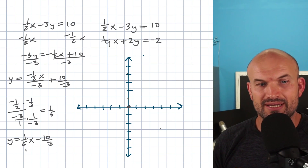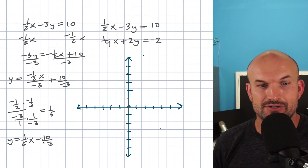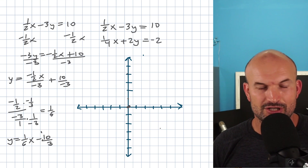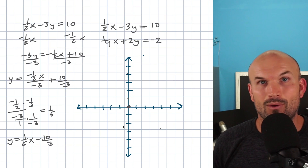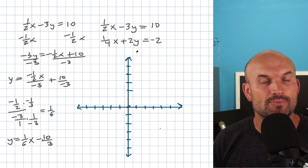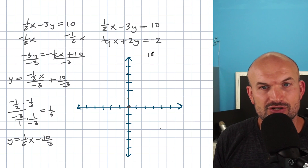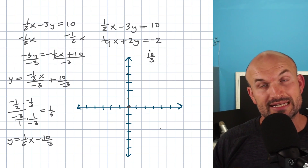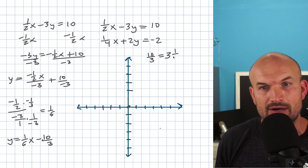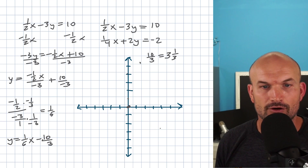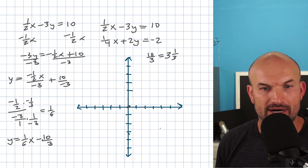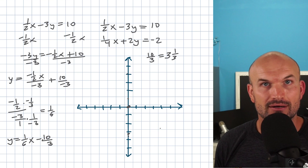The reason writing it as a mixed number is helpful is because it lets you find the y-intercept more easily. I want you to think about where negative 10 over 3 is on the y-axis. Convert the improper fraction: 3 goes into 10 three times with a remainder of 1, so 10/3 is 3 and 1/3. That means the y-intercept is negative 3 and 1/3 — so go down 3 and then just a little more, one third of a unit.